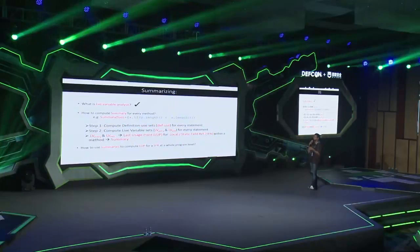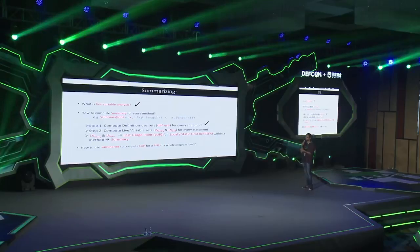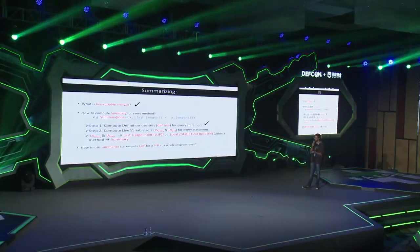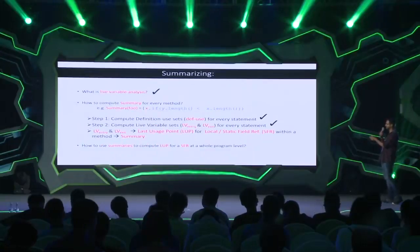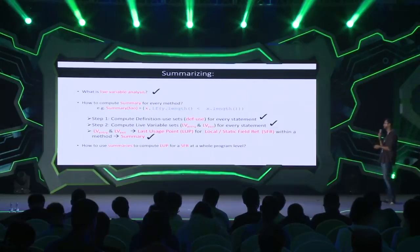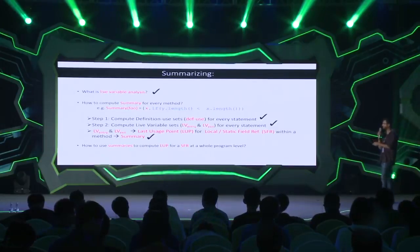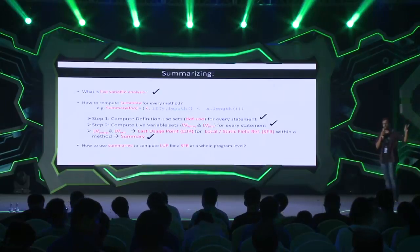To summarize: we went through live variable analysis, computed summaries for individual methods using a two-step process — computing def-use sets, then LvEntry and LvExit sets — and used those to find the last usage point of every static field reference or local variable, storing it in a summary. Then we combined summaries to compute the last usage point at a whole-program level.